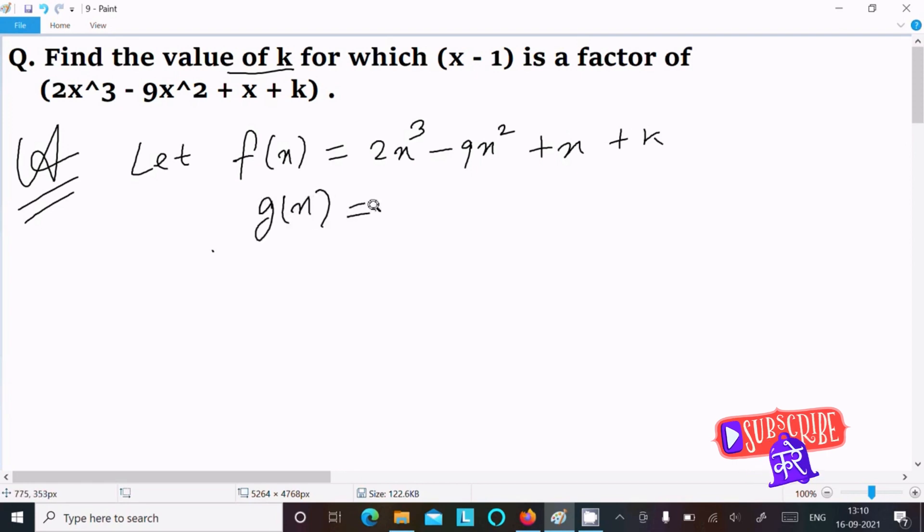After that, here g(x) equal to x minus 1. Then since x minus 1 is the factor, then here g(x) equal to 0. Now x minus 1 equal to 0, x equal to 1.